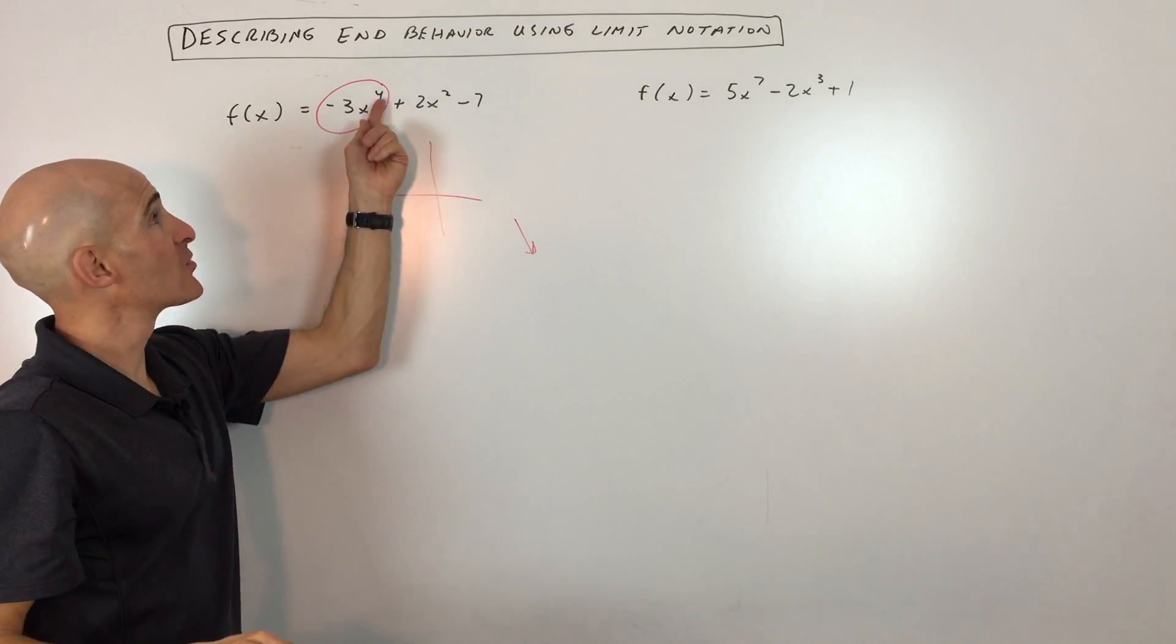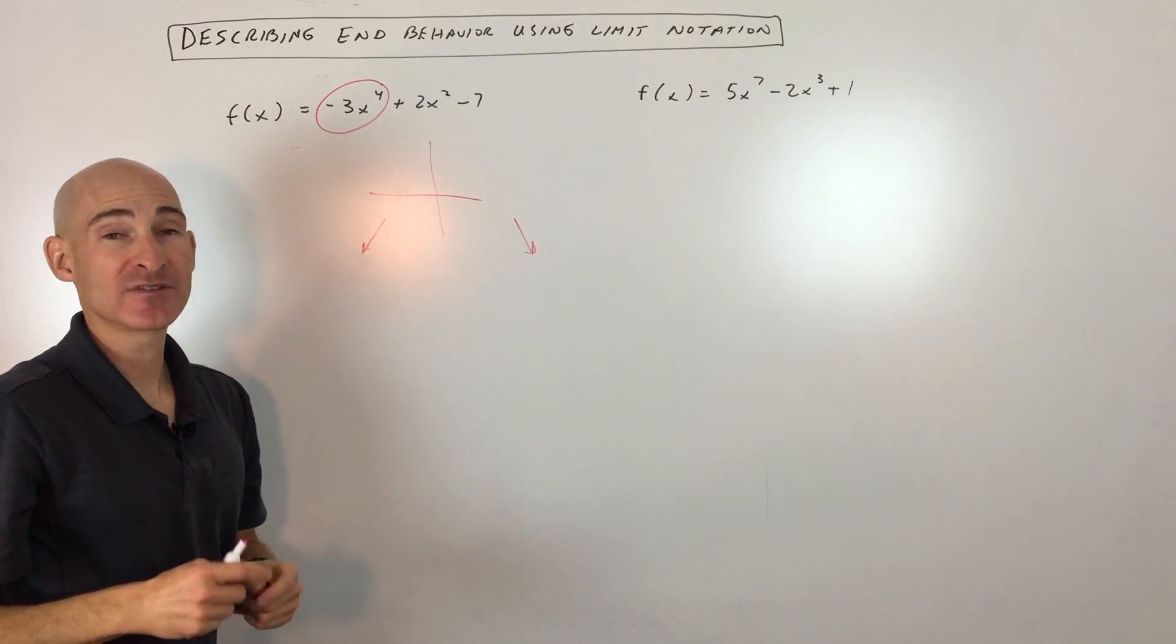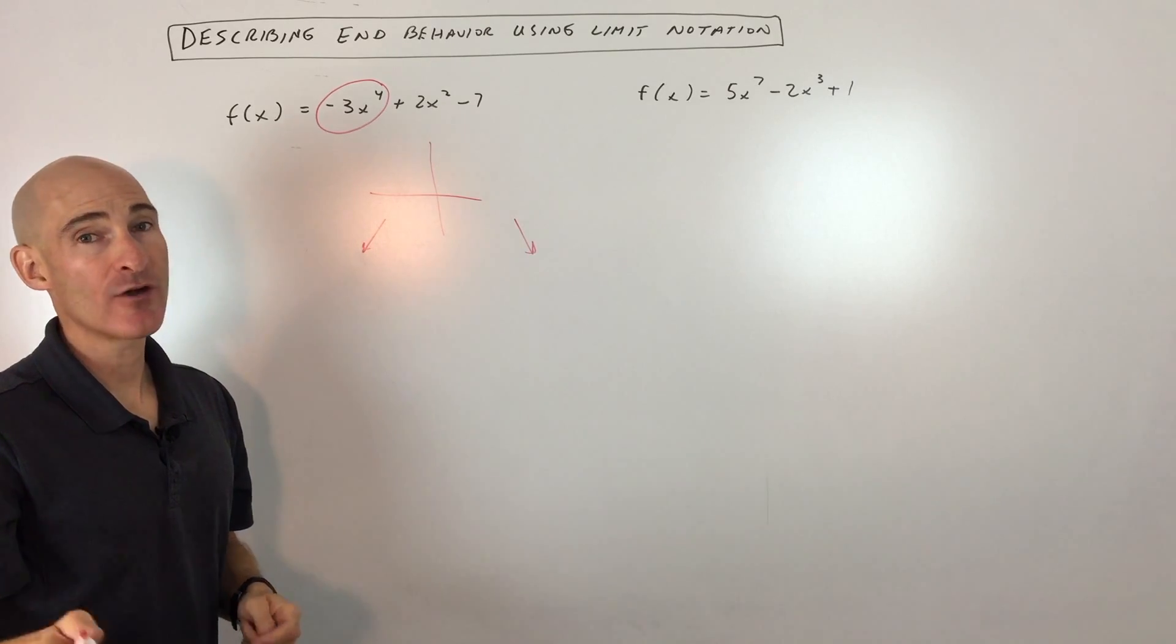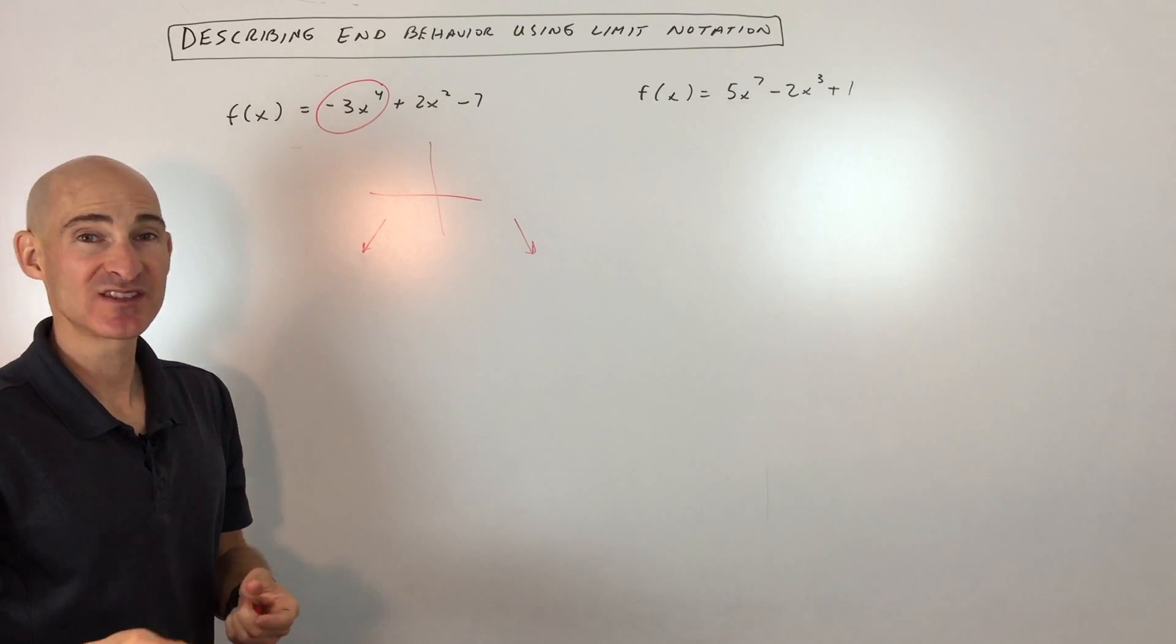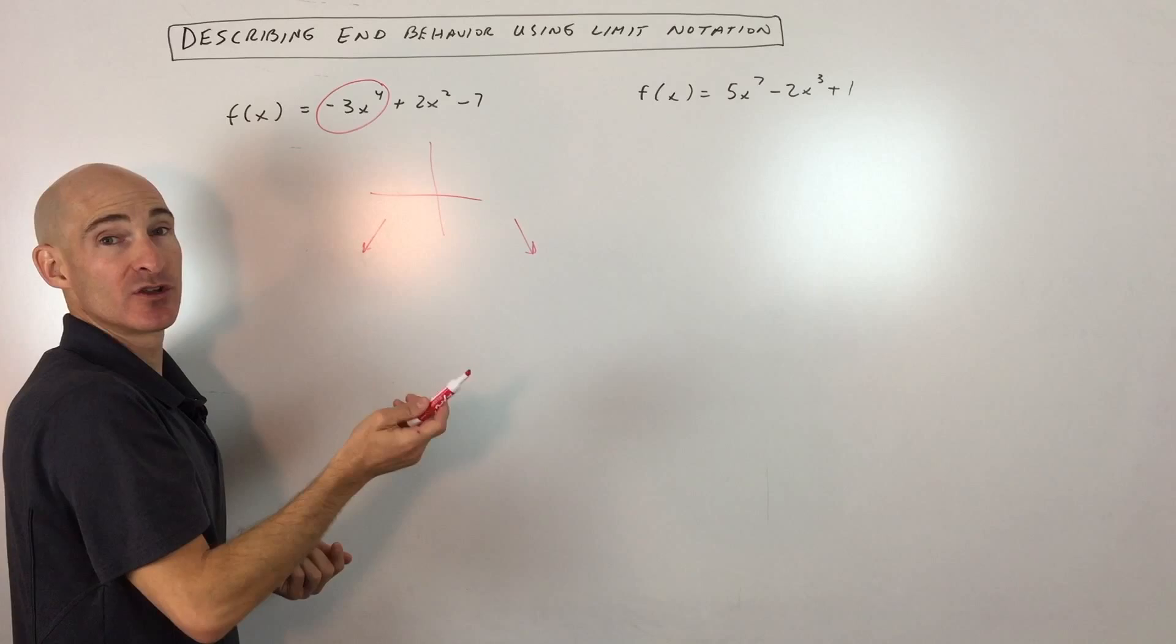Now, if it's an odd degree, the left and right end behavior are going to be opposite. They're going to be going opposite directions. Now, if you forget all of that, which sometimes it's easy to do, just do a little test.